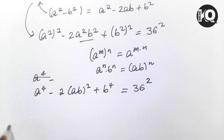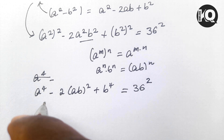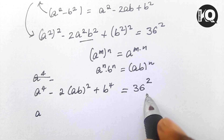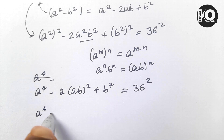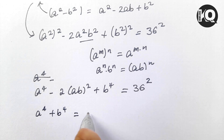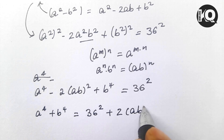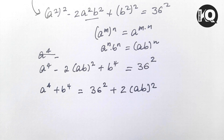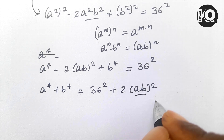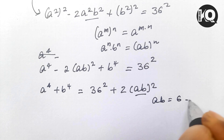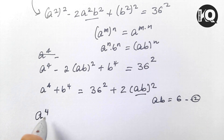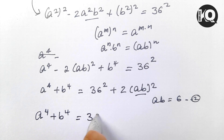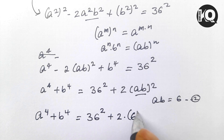Now let's take the 2·(ab)² term to the right-hand side. So a⁴ + b⁴ = 36² + 2·(ab)². We have ab = 6 from equation 2, so a⁴ + b⁴ = 36² + 2·(6)².